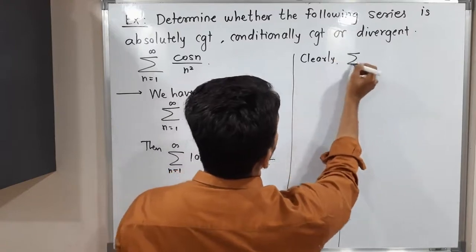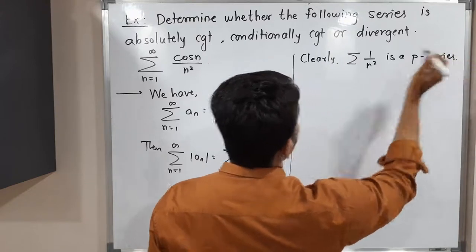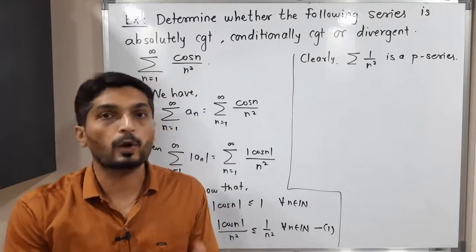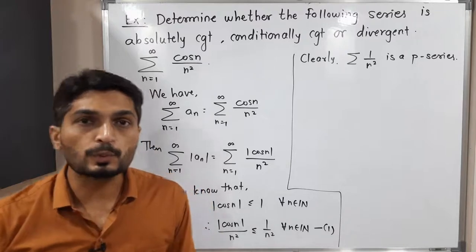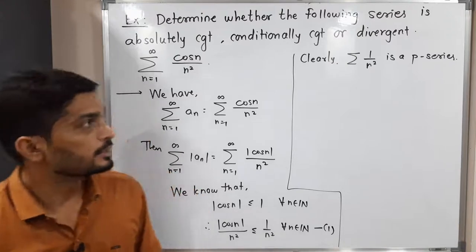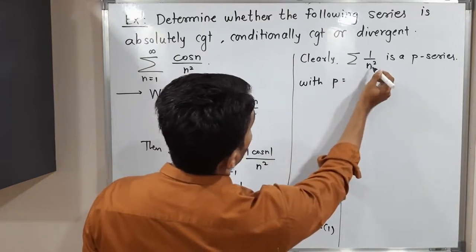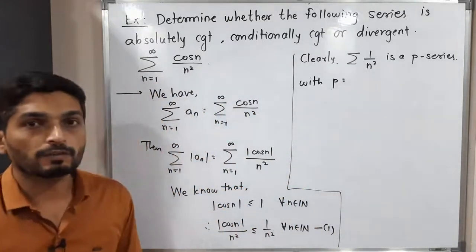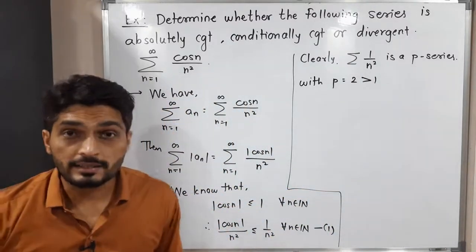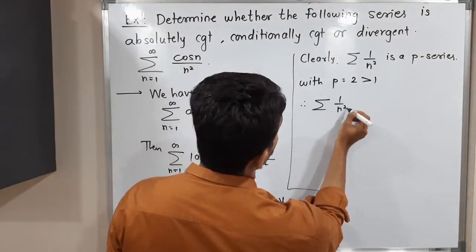Clearly, summation 1 upon n squared is a p-series. A p-series means a series of the form summation 1 upon n raised to p. We have already proved that when p is greater than 1, the p-series is convergent. Here the value of p is 2, since the power of n is 2, which is definitely greater than 1. Therefore by that result, this series is convergent — summation 1 upon n squared is a convergent series.